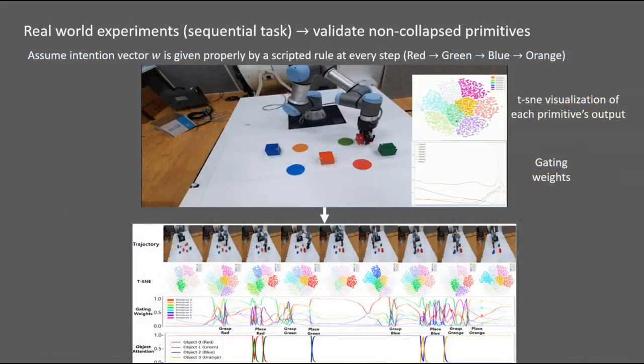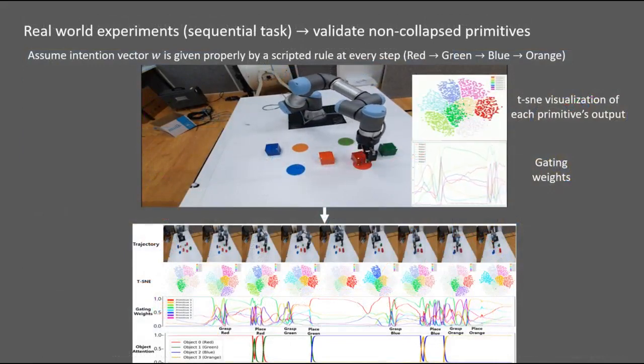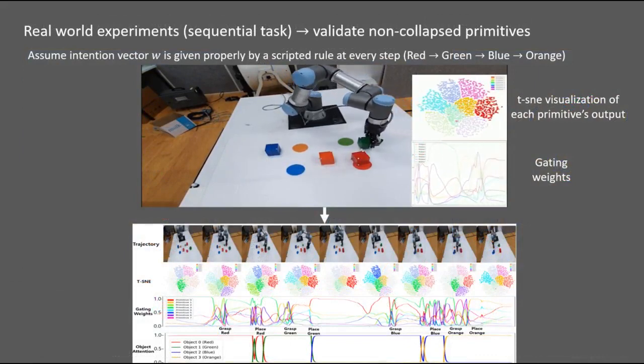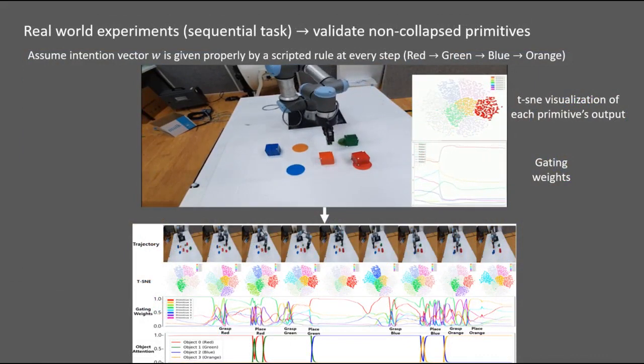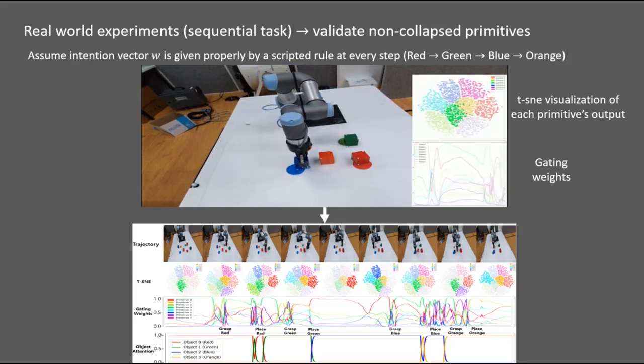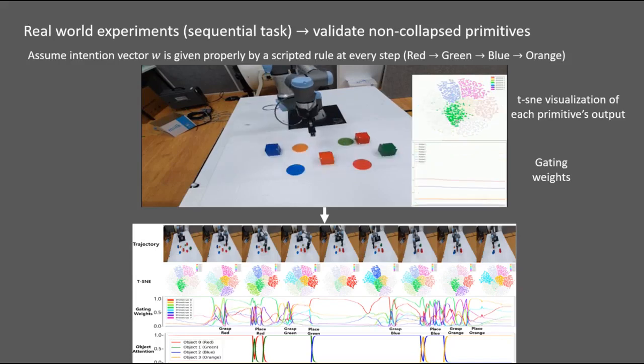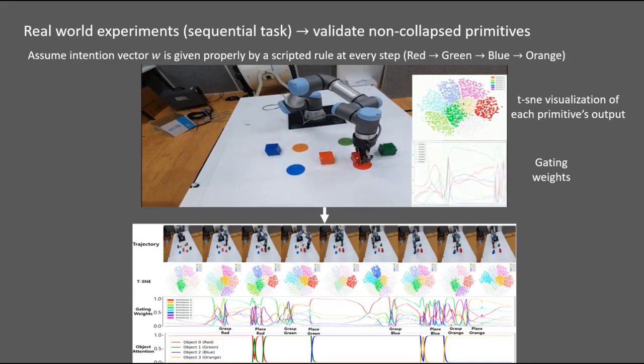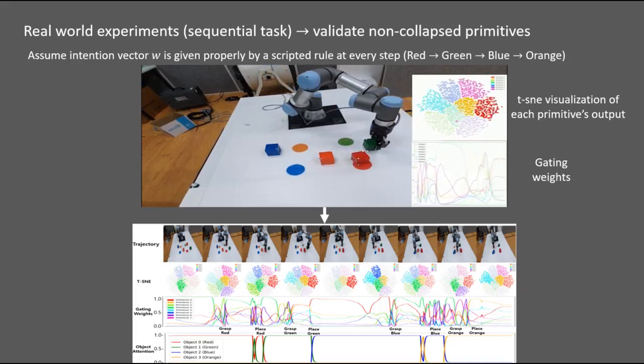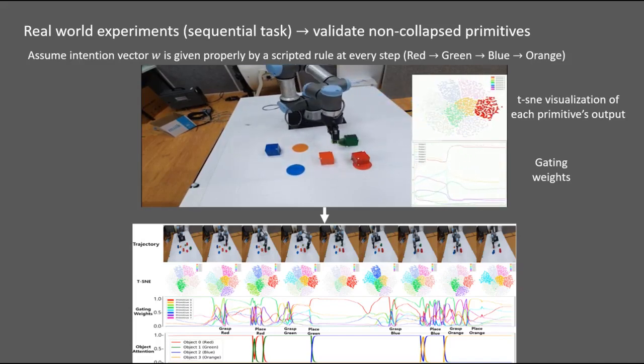We also evaluated the trained policy on sequential manipulation problem to validate whether the entire primitives are properly combined together rather than a few primitives work across all time steps. The robot is asked to arrange four objects into each goal state in the order of red, green, blue, orange. By controlling the intention vector omega according to predefined scripted rule, the robot successfully does the given task and shows proper gating and attention weight.